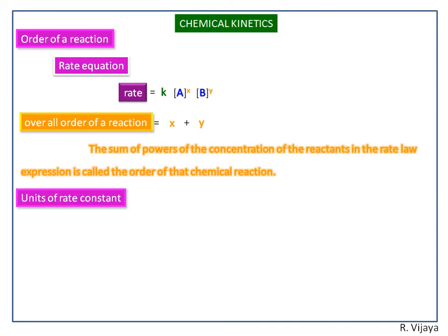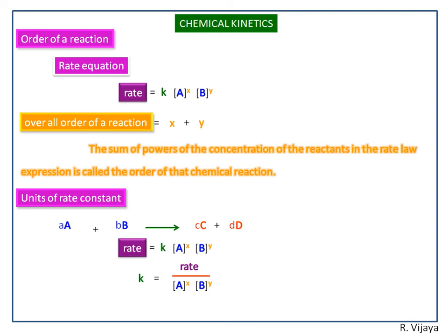Next, we see the units of rate constant. Here we are looking at the rate equation. We bring k to the left-hand side. By interchanging, we get k equals rate divided by concentration of A to the power x and concentration of B to the power y. Rate is expressed in concentration per time, and the concentration terms to the power x and y can be written in general as concentration to the power n. This gives the general units of rate constant.